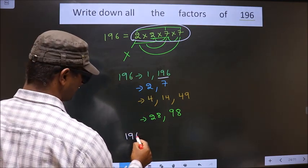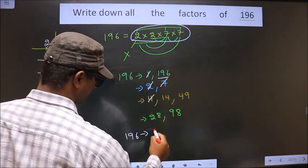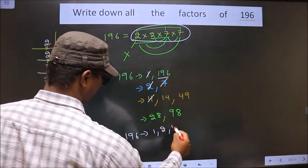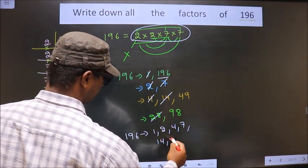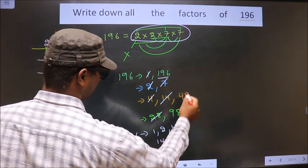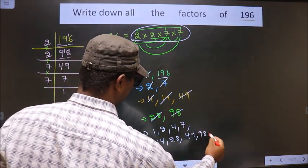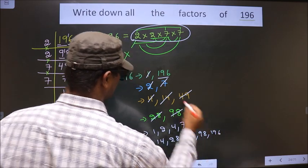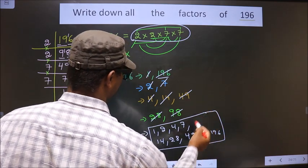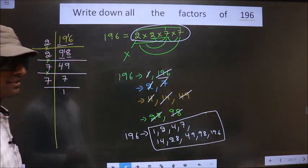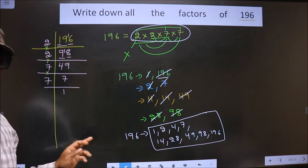That is 1, 2, 4, 7, 14, 28, 49, 98, and finally 196. These are all the factors of 196. Am I clear?